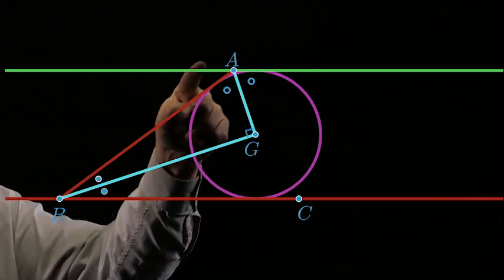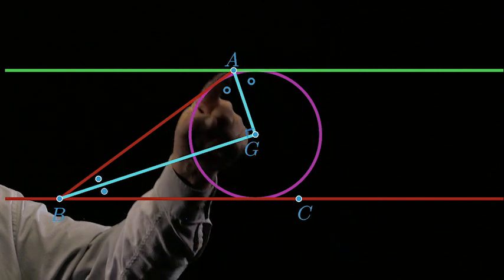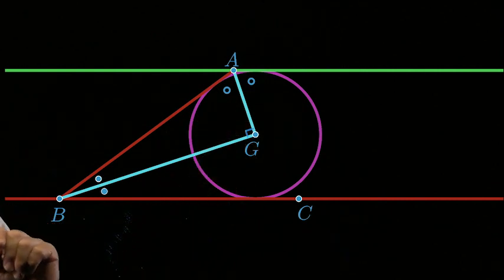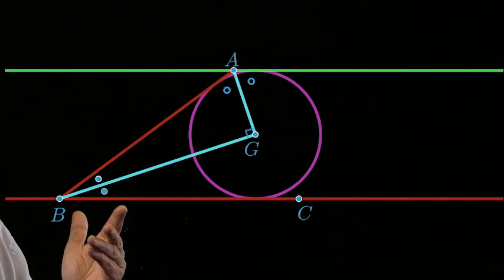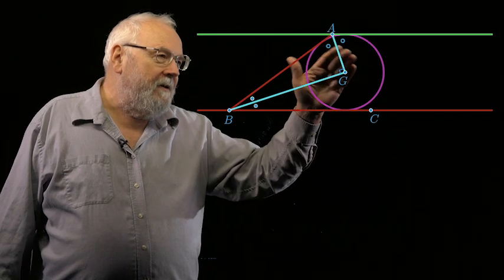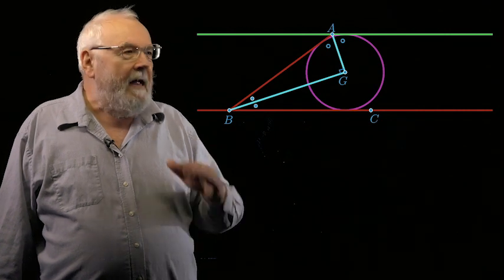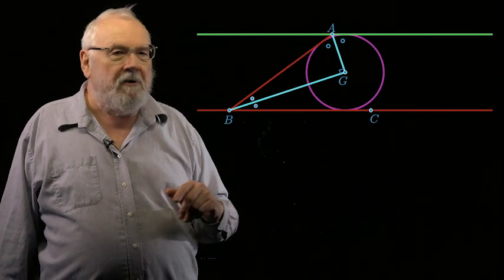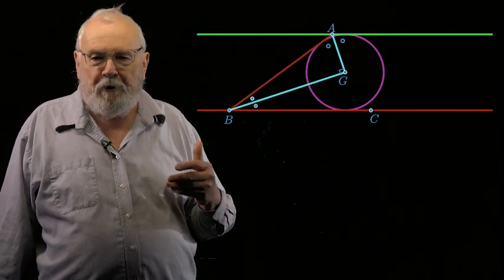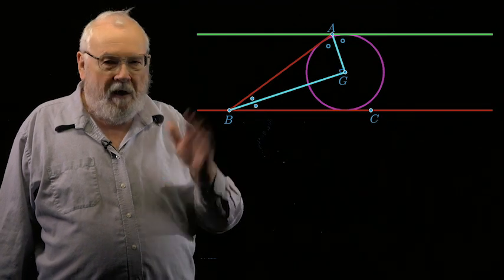Now, why is this an angle bisector here, the line AG? Well, it's an angle chase. There's not much going on in this diagram. You know, the theorem is about parallel lines and transversals and the angles of a triangle adding up to 180. That's all you need. I'll leave that to you.